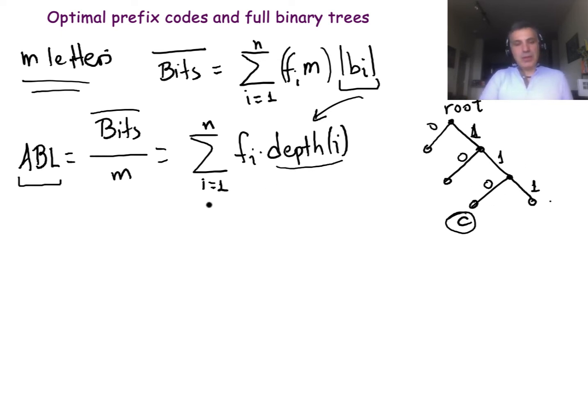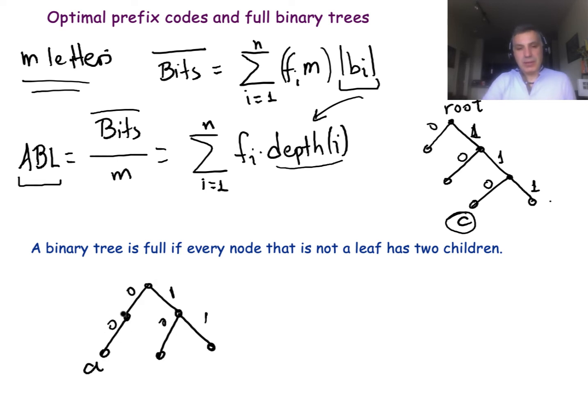What does this tell us about the binary trees that would represent an optimal prefix code? We say that the binary tree is full if every node either has zero children and so it is a leaf, or it has two children. We cannot have nodes that only have one child. Imagine that I give you a binary tree with a node that only has one child. So what you can do is you can remove that node, collapse this portion of the tree into a single edge and as you see we will definitely have lower ABL, a lower average bit length because we have decreased the depth of at least one codeword. So to summarize, an optimal prefix code will definitely be represented as a full binary tree.